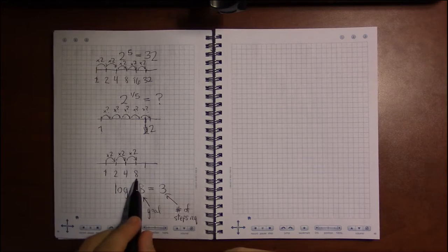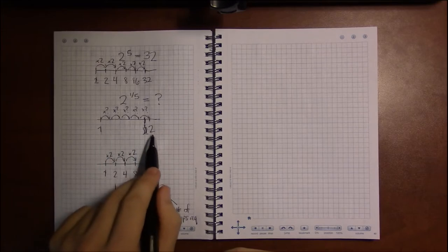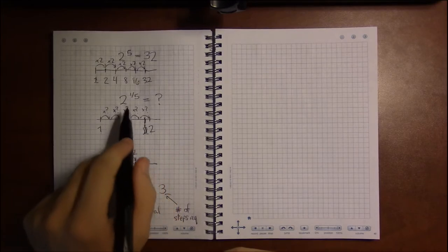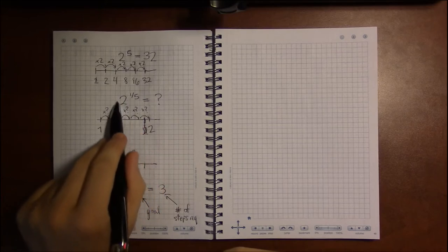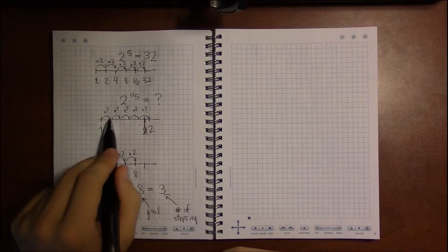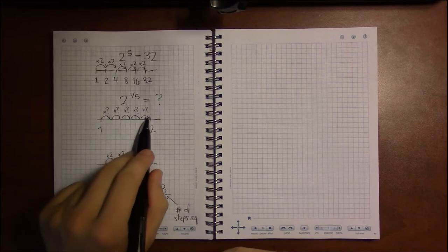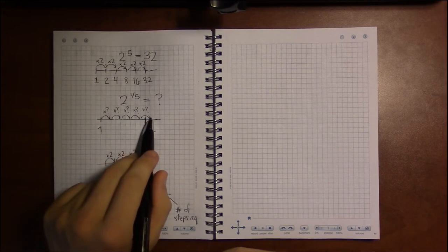They still fix the starting point and the ending point. We started at 1, we ended at 8. Here, with the fraction in the exponent, we started at 1, we're ending at 2. It's just the question is different. With radicals and fractions in our exponents, we're asking what's the step size to get to our goal in the desired number of steps.